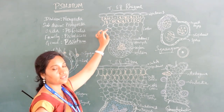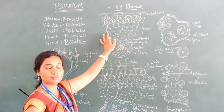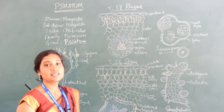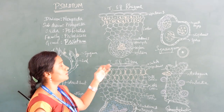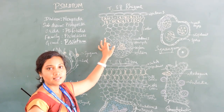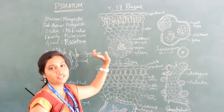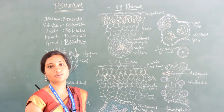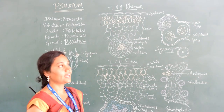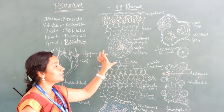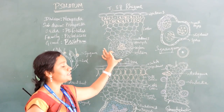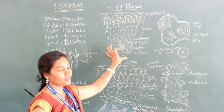In the center is the middle cortex, made up of parenchymatous cells filled with starch grains. The innermost cortical cells are dark brown in color due to the presence of phlobobine, which is the oxidation product of tannins. At the center is the stele region, which is the central core of the plant body.